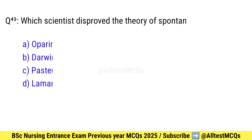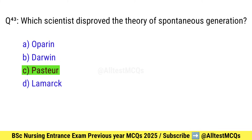Question number 43. Which scientist disproved the theory of spontaneous generation? Correct option is C: Pasteur.